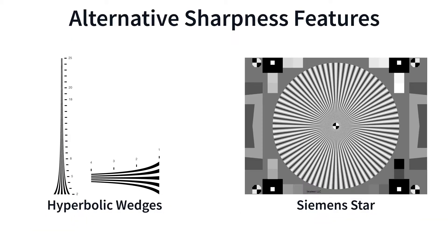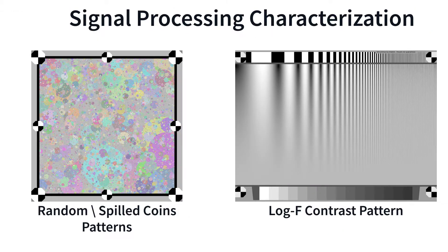Other features for measuring sharpness include hyperbolic wedges and Siemens stars. The effects of signal processing on sharpness can be measured with random or spilled coins patterns, as well as the log F contrast pattern.